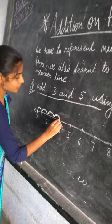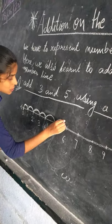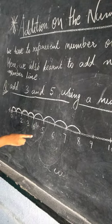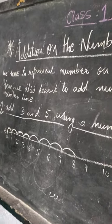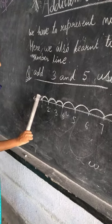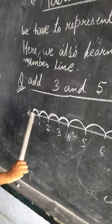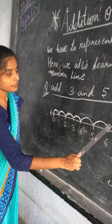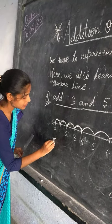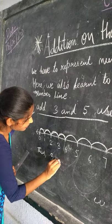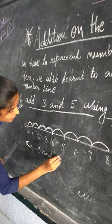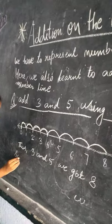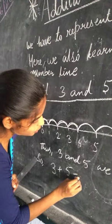Next, start from four and move forward five steps: one, two, three, four, five. So three and five — we got eight. Three plus five equals to eight.